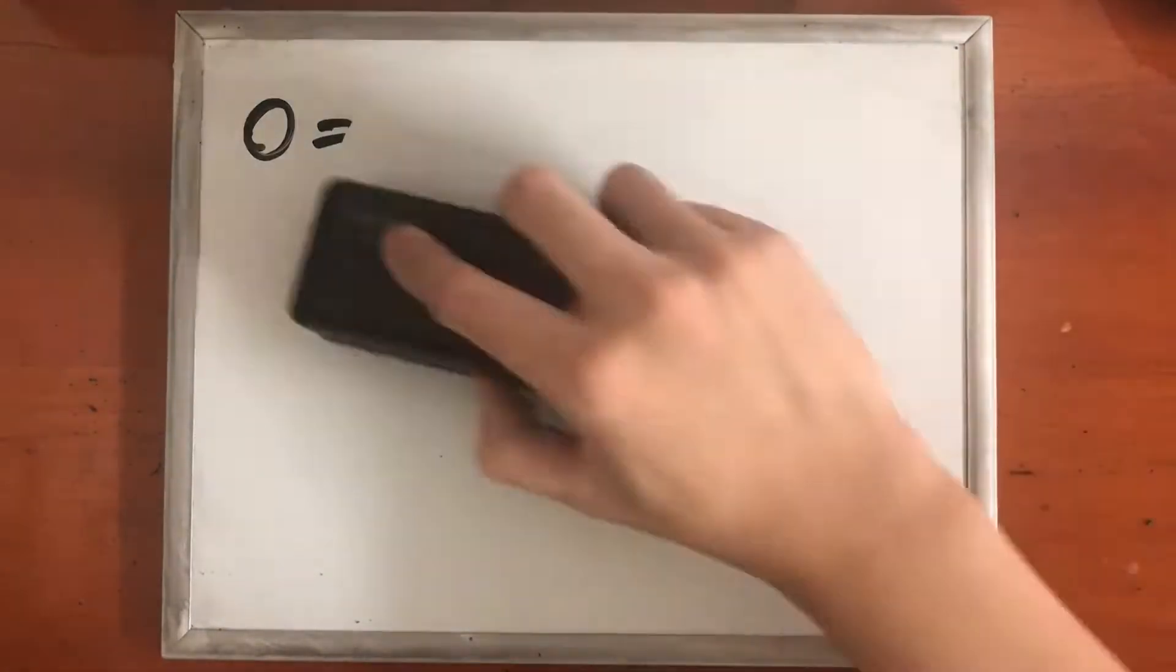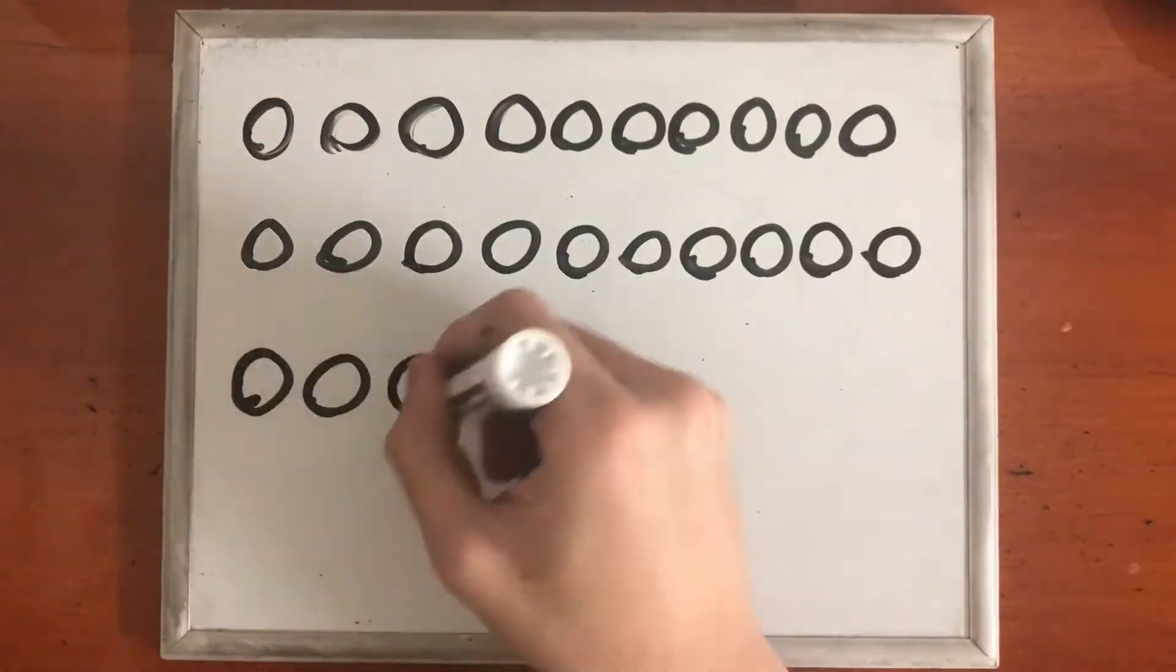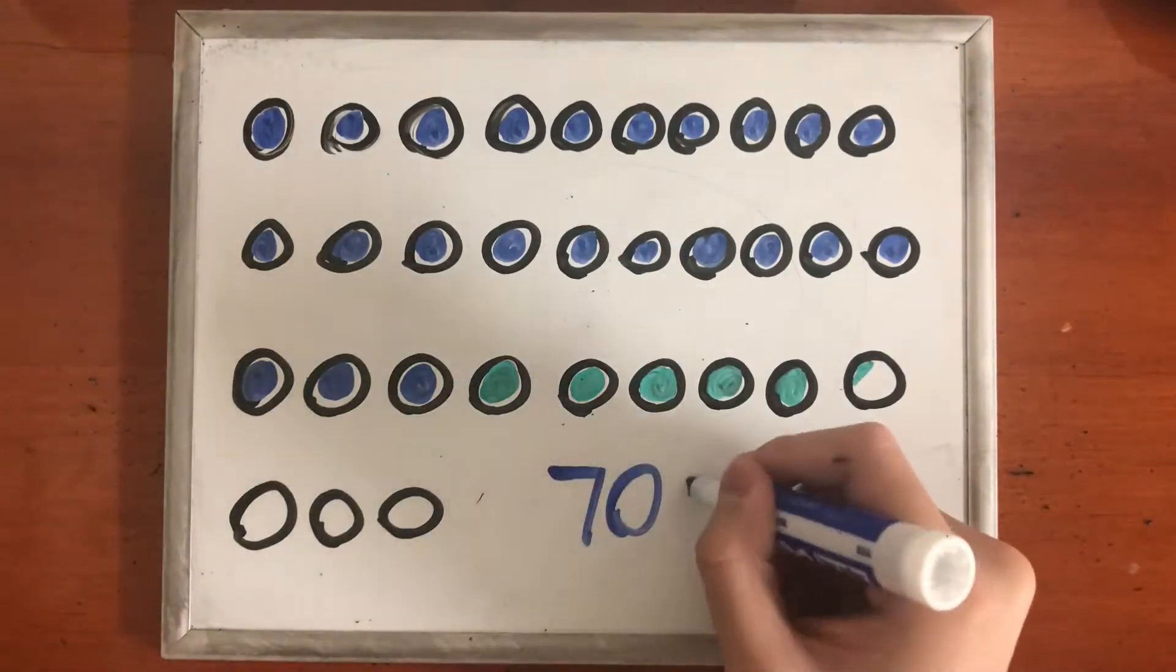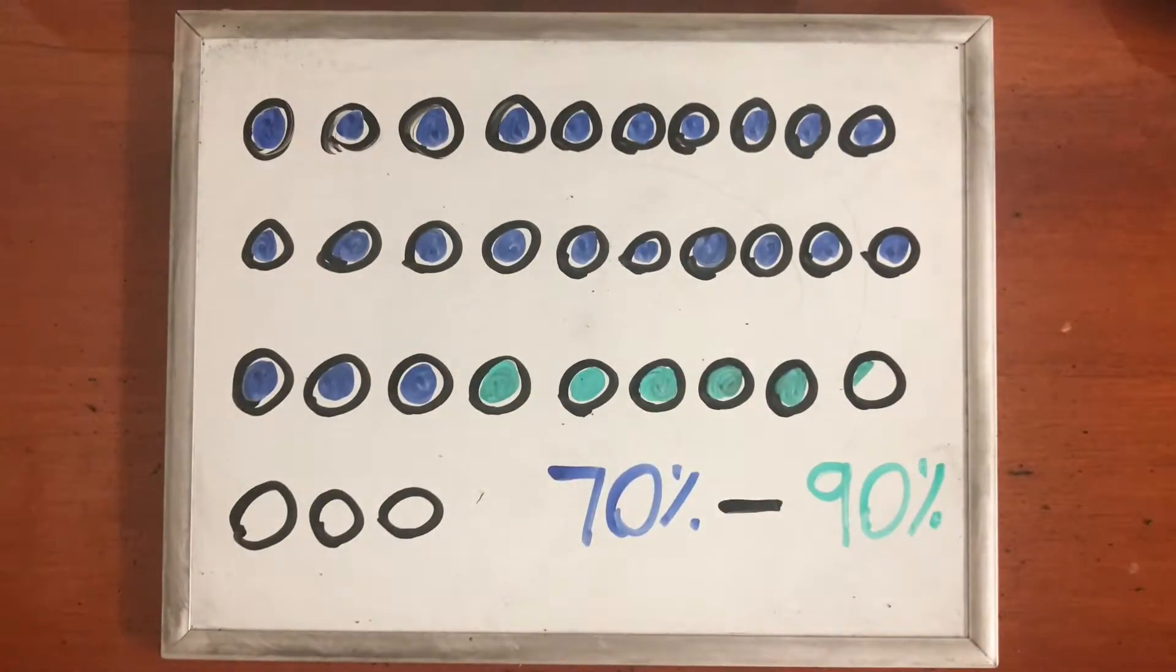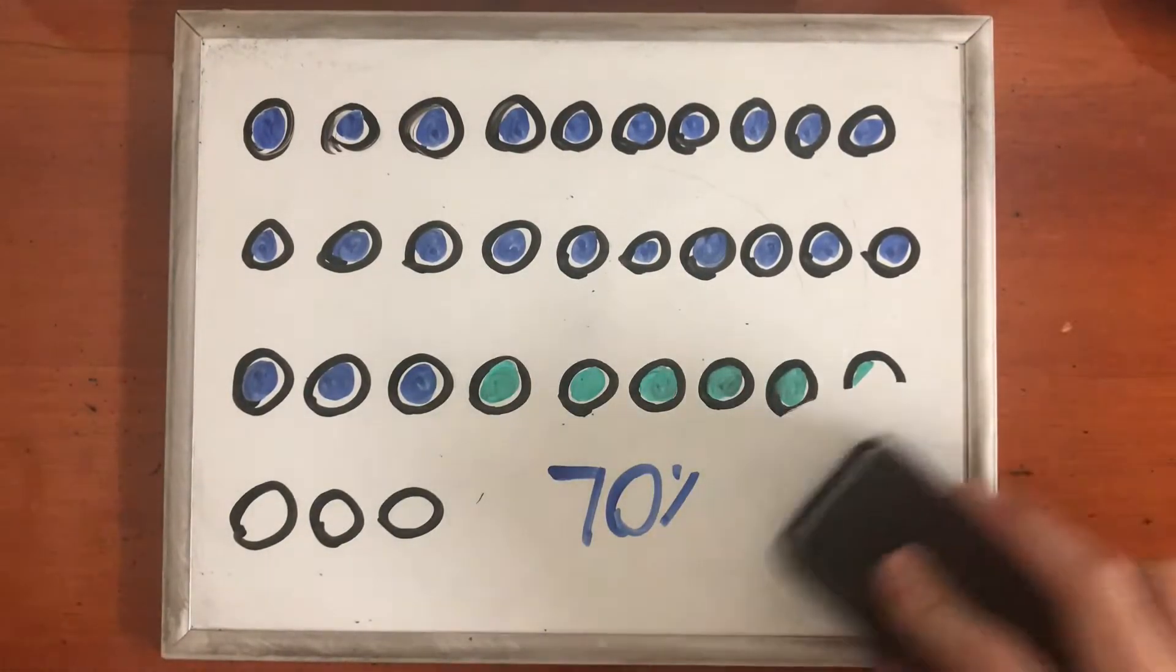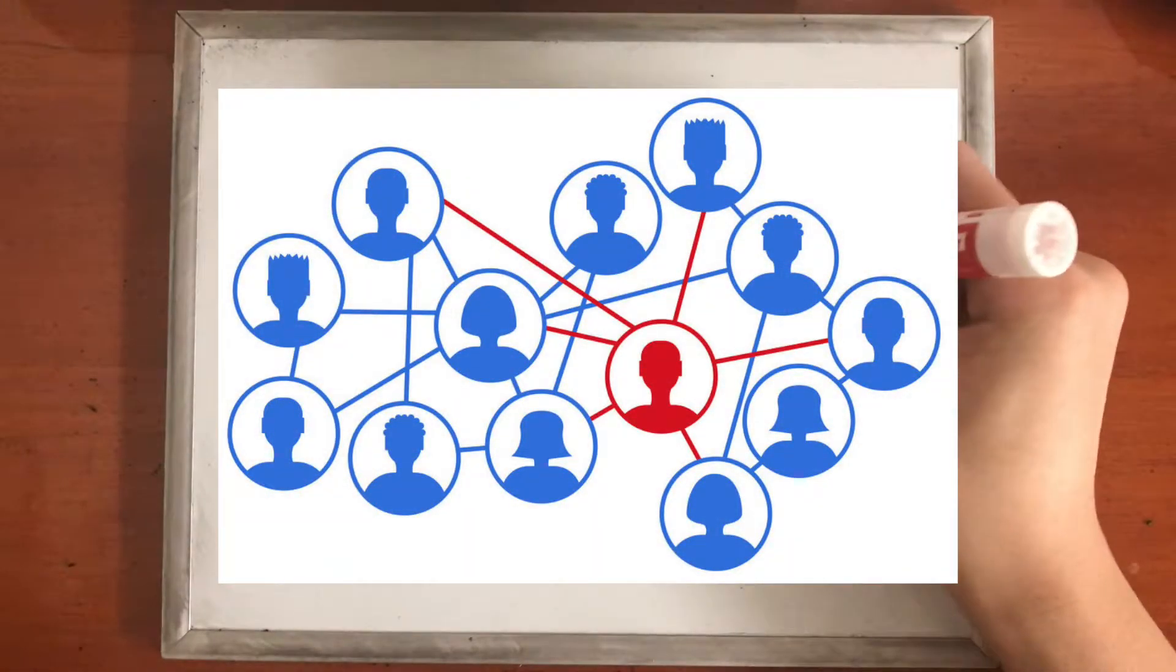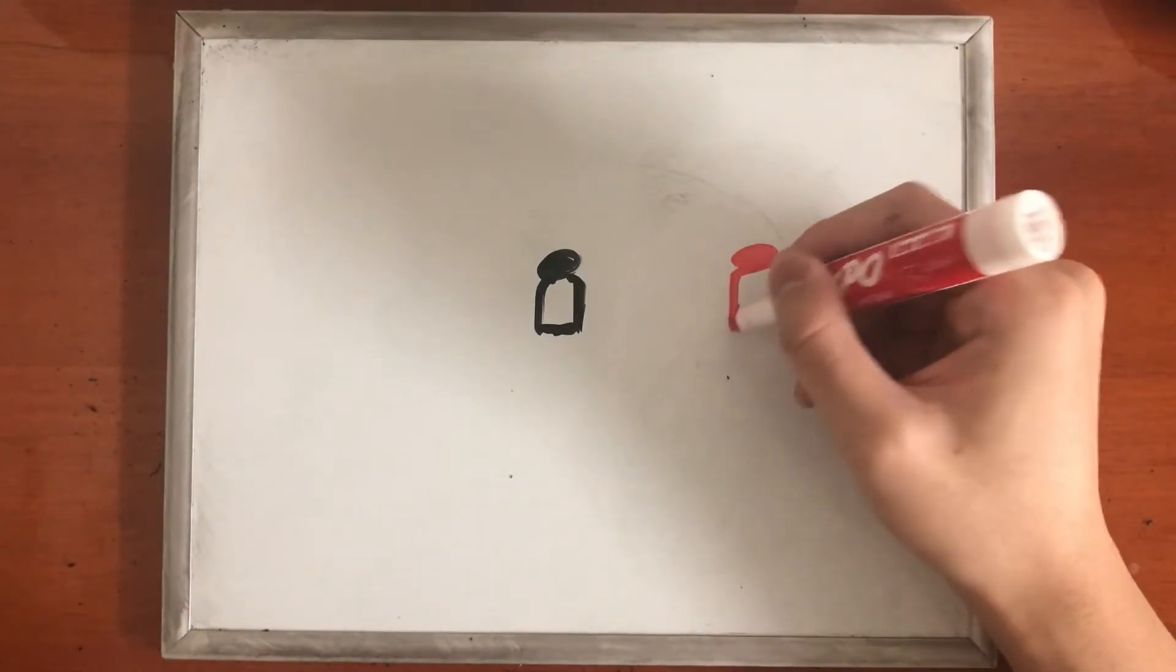and if one of these 33 circles represents 10 million people, that means herd immunity is only achieved when 70 to 90% of the population gets vaccinated, which is a tall order, but let me put it this way.